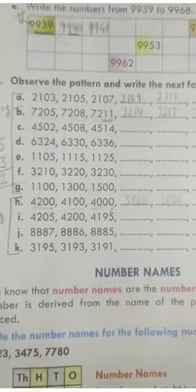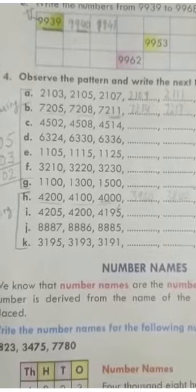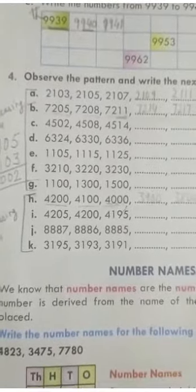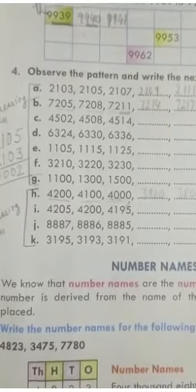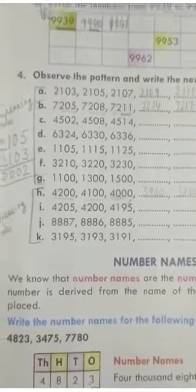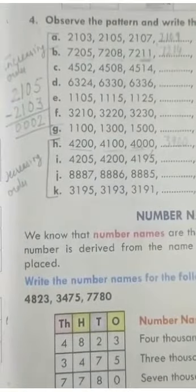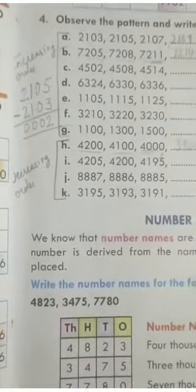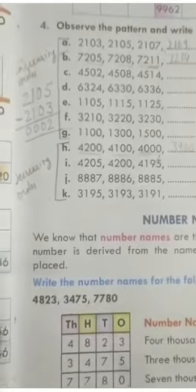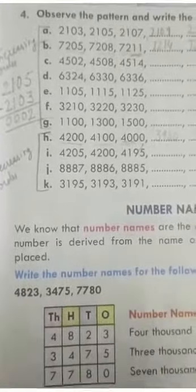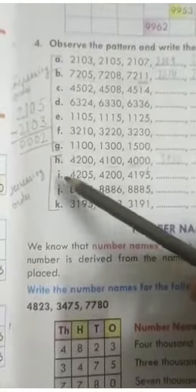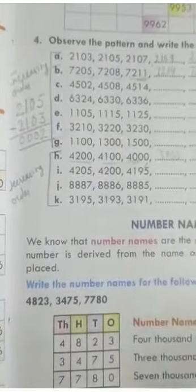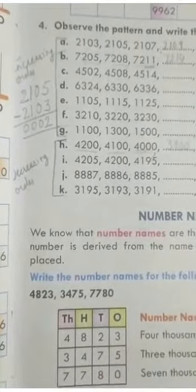If you have to keep the sequence in increasing order, you observe whether the numbers are arranged in increasing or decreasing order, then find the skip counting — whether by 2s, 3s, 5s, 10s, or 100s. Now you have to do Parts C, D, E, F, G, I, J, K, L yourself. I hope this topic is clear to you, my dear students. Thank you, have a nice day.